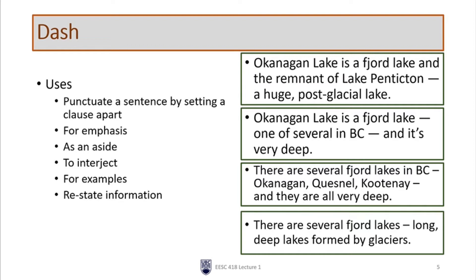Other uses of a dash are to interject, list examples, and restate information. For example: 'There are several fjord lakes in BC — Okanagan, Quesnel, Kootenay — and they're all very deep.' That lists some examples. Another: 'There are several fjord lakes — long, deep lakes formed by glaciers.' Here I'm restating and defining the term, setting it apart so the reader takes a pause, sees a shift in gears, and pieces it all together in their mind.